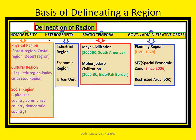The basis of delineating a region: we can delineate a particular region on the basis of homogeneity; second on the basis of heterogeneity; third on the basis of spatiotemporal attributes; and last on the basis of government order or administrative decision. The first basis is homogeneity.